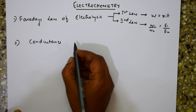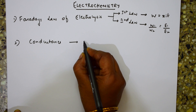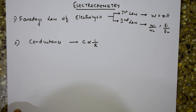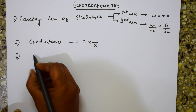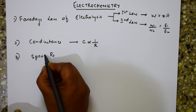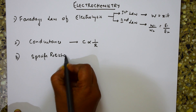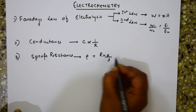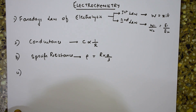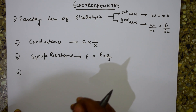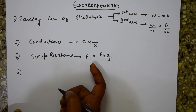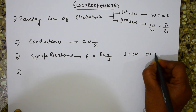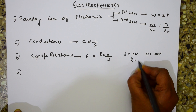Conductance is inversely proportional to resistance. The third formula is specific resistance, represented by rho, which equals R × A/L. Here, L/A is the cell constant. If L = 1 cm and A = 1 cm², then R becomes equal to rho.